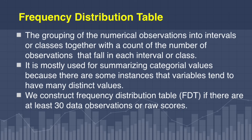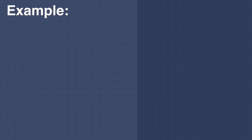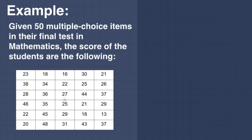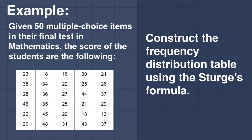For example, given 50 multiple choice items in their final test in mathematics, the scores of the students are the following. We have 30 scores consisting of 6 rows and 5 columns. Now, construct the Frequency Distribution Table using the Sturge formula.